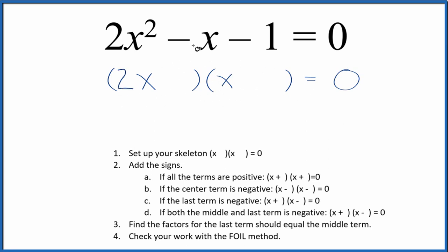So this is our skeleton equation, and when we have a negative and a negative, so both the middle term and that last term, if they're negative, we're going to put a plus and a negative in our skeleton here.